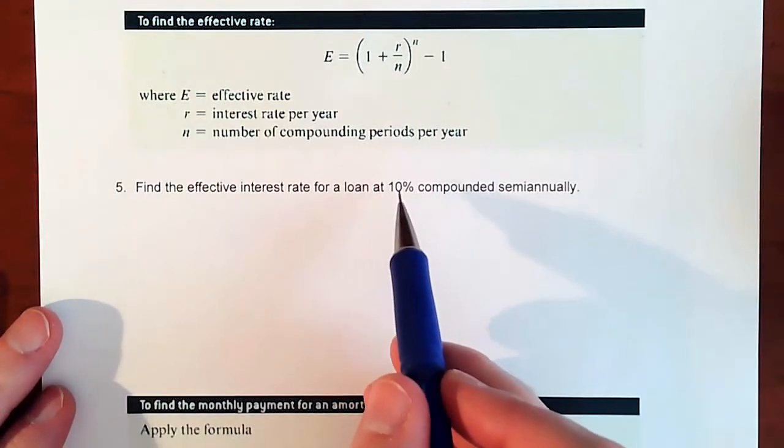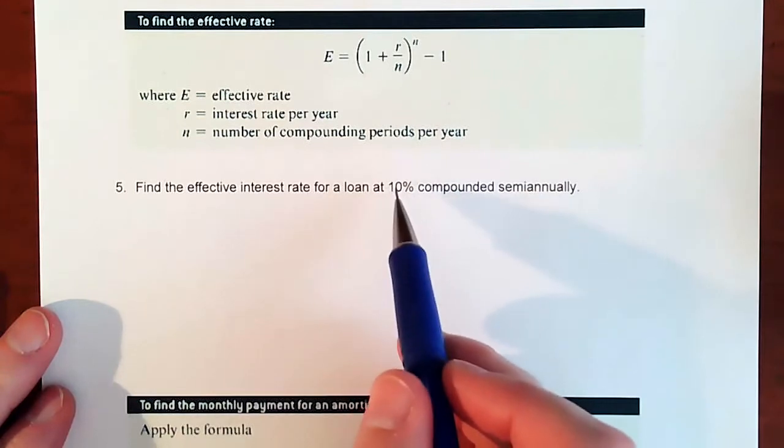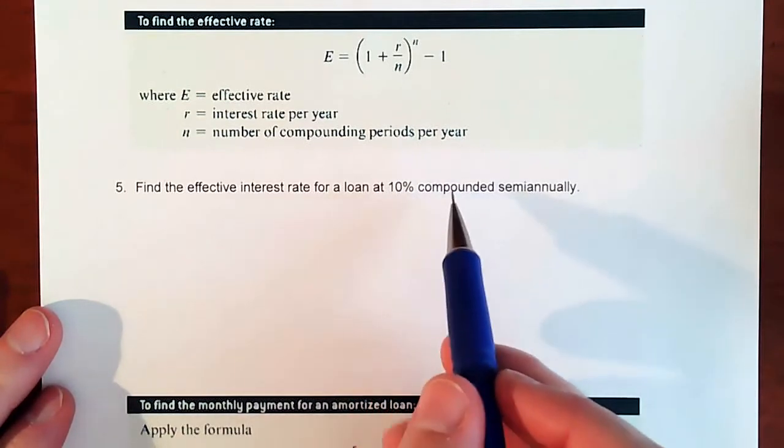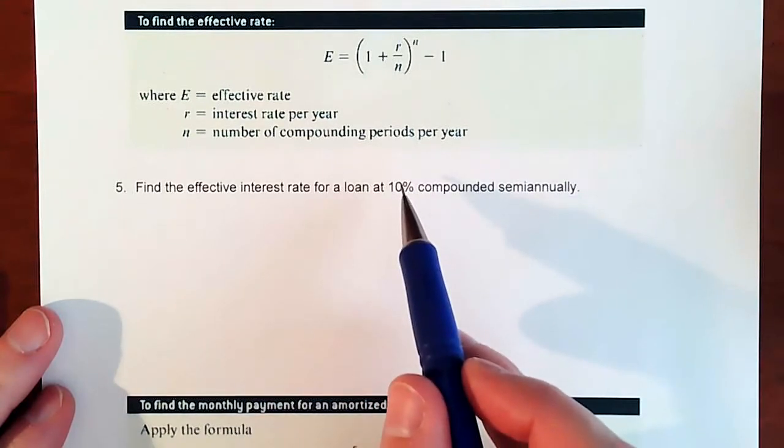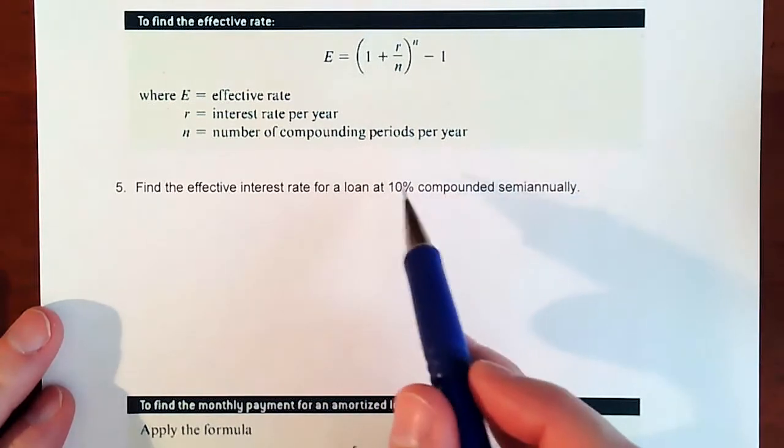if it compounded one time per year, yes, you'd be earning 10%. But as soon as you start to compound something more than one time, when you take this 10% and break it into smaller percentages but compound it more times per year, you actually end up earning more than 10%.